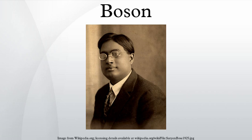Composite bosons: composite particles can be bosons or fermions depending on their constituents. More precisely, because of the relation between spin and statistics, a particle containing an even number of fermions is a boson, since it has integer spin. Examples include: any meson, since mesons contain one quark and one antiquark; the nucleus of a carbon-12 atom, which contains six protons and six neutrons; and the helium-4 atom, consisting of two protons, two neutrons, and two electrons. The number of bosons within a composite particle made up of simple particles bound with a potential has no effect on whether it is a boson or a fermion.